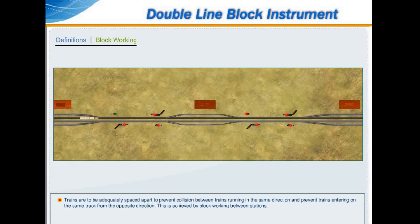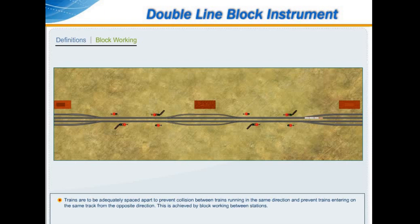Trains are to be adequately spaced apart to prevent collision between trains running in the same direction, and to prevent trains entering on the same track from the opposite direction. This is achieved by block working between stations.